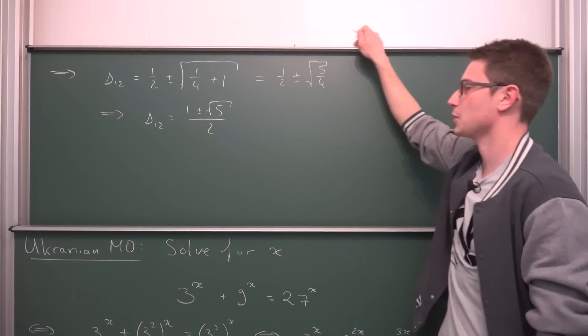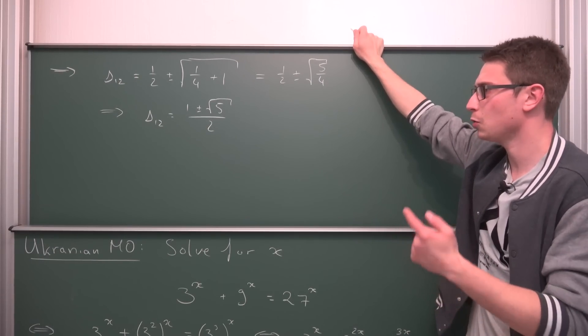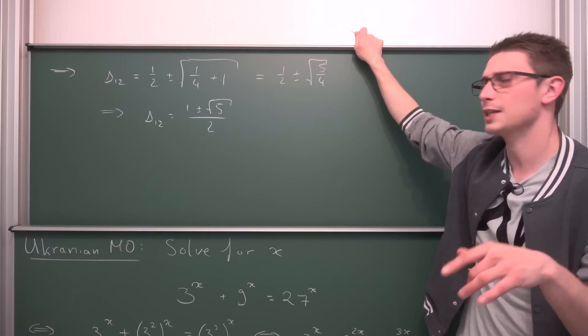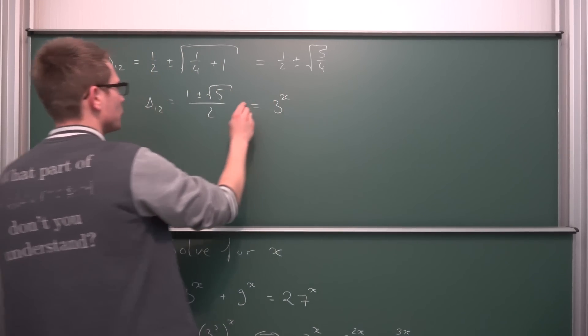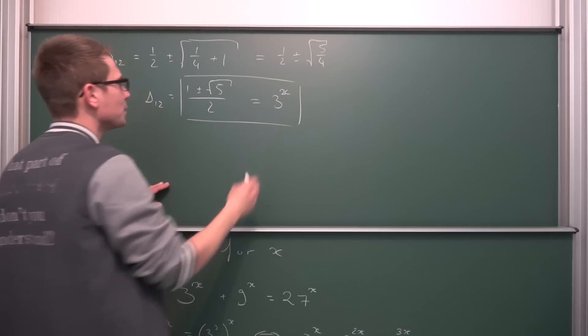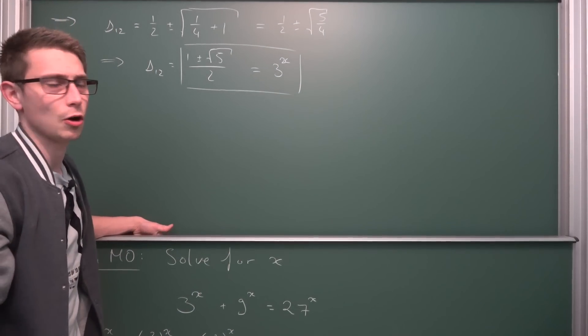Okay, thus far, thus good. But think back. We know what delta is. Delta is three to the x power. So we get two solutions to three to the x power being equal to one plus or minus the square root of five over two.